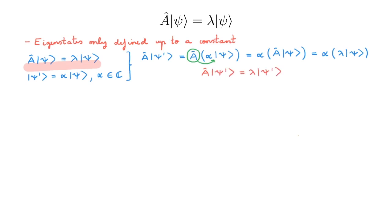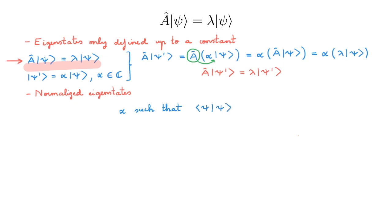As alpha and psi are scalars we can exchange their order to obtain a new eigenvalue equation for A in terms of psi prime. This is exactly the same eigenvalue equation as for psi, so indeed any multiple of psi is also an eigenstate of A with the same eigenvalue. This means all an eigenstate is telling us about is a direction in state space, and any state along that direction, whatever its length, is an eigenstate with the same eigenvalue. To remove this freedom we will always work with normalized eigenstates, choosing alpha such that the scalar product of psi with itself equals 1.